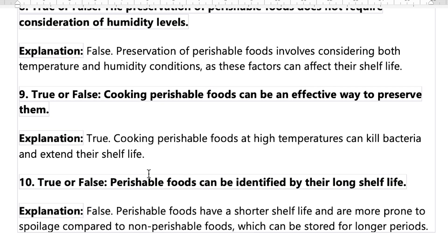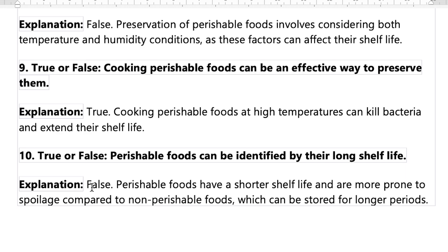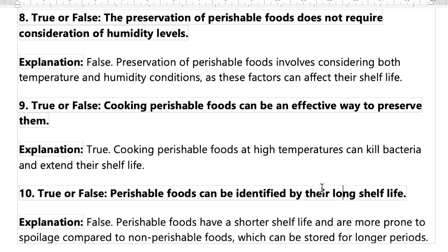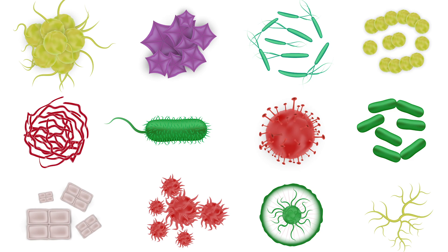Number nine: cooking perishable food can be an effective way to preserve them. Yes, it can kill bacteria and extend the shelf life. Number ten — I think this is the one we got wrong last time — perishable food can be identified by their long shelf life. That's false. Perishable foods have a shorter shelf life and are more prone to spoilage compared to non-perishable foods.